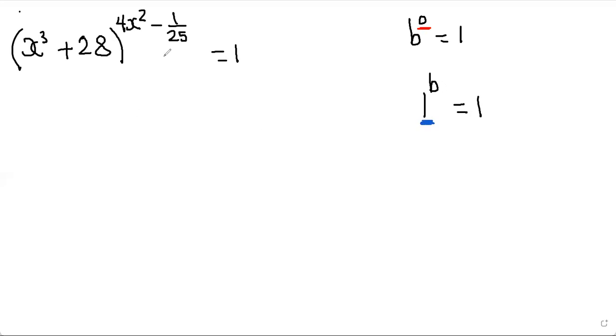Then if we look at this equation right here, the first thing I could see is if the exponent is 0, then it will give me 1. So if this is 0, this should give me 1. So that's what I highlighted with red there. I'm going to take the 4x squared minus 1 over 25, and I say this must equal 0, so that all of this to the power of 0 would equal 1.